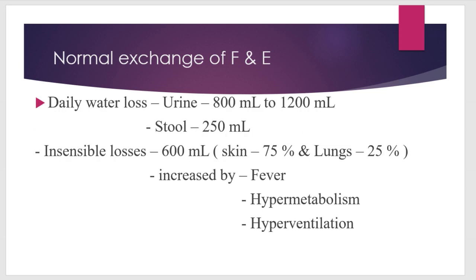Now let's talk about daily water loss. Intake is approximately 2 liters for an average adult of around 60 kg. In daily water loss: through urine, an average of 1000 ml or 1 liter is lost, with a range of 800 ml to 1200 ml. Through stool, around 250 ml is lost. There are also insensible losses — losses we cannot sense but that occur continuously — roughly amounting to 600 ml in 24 hours.